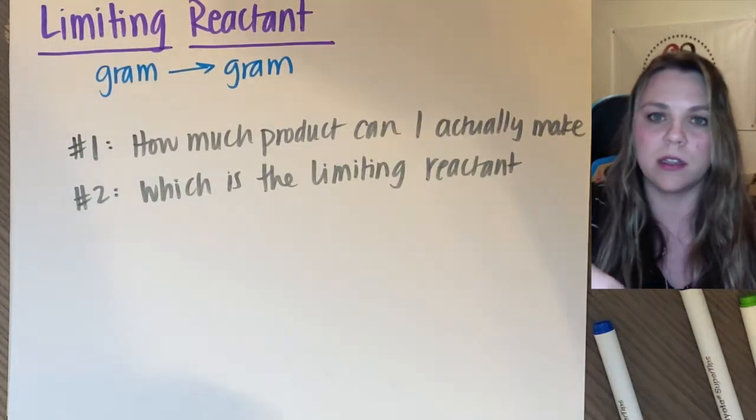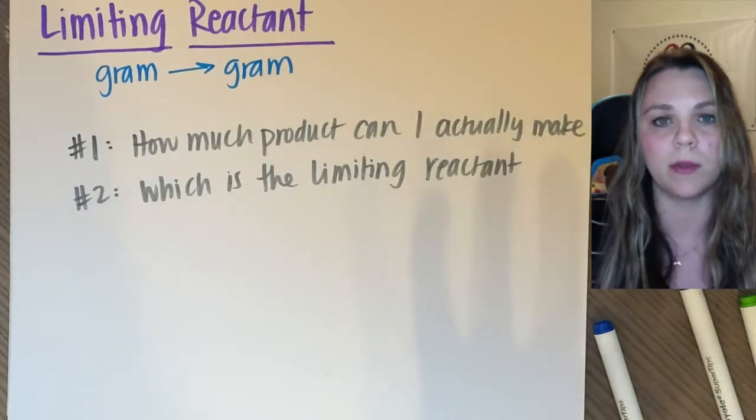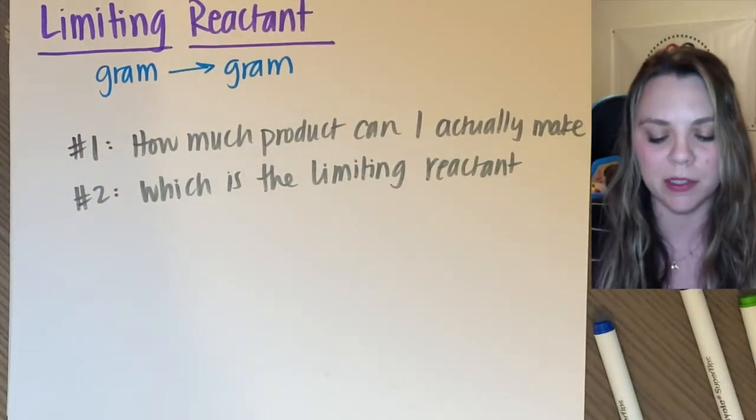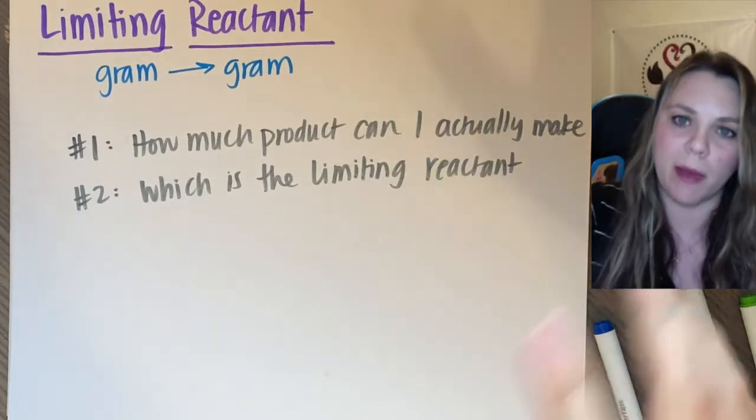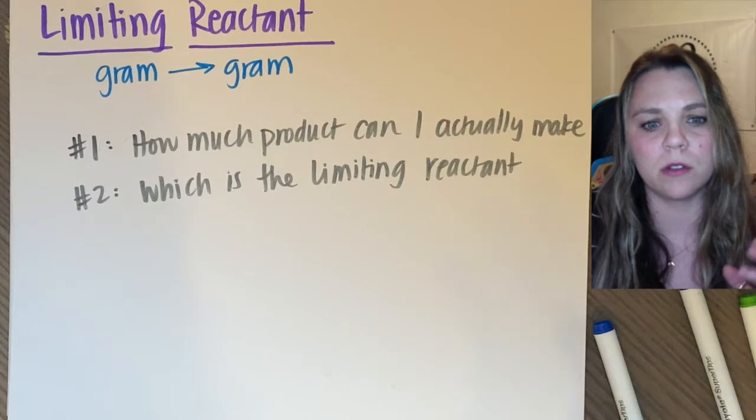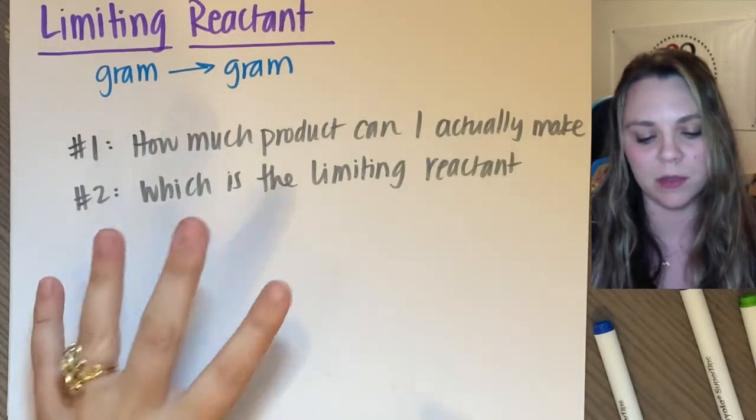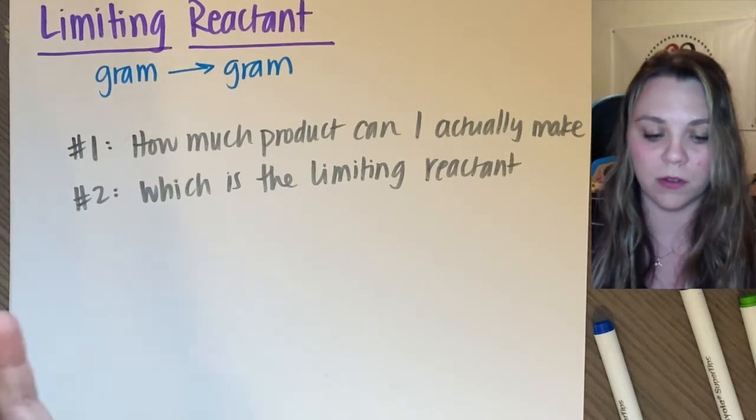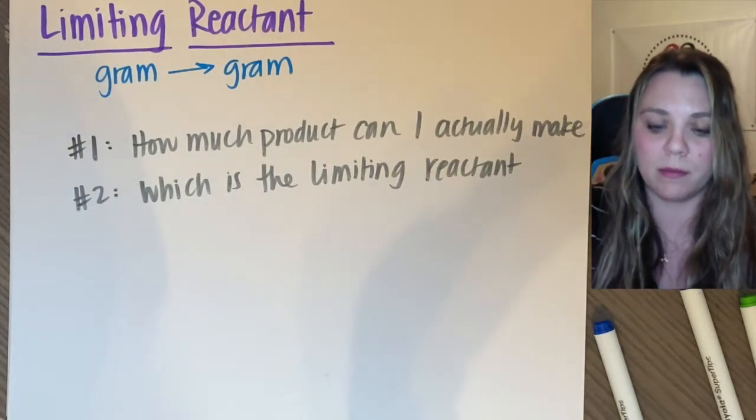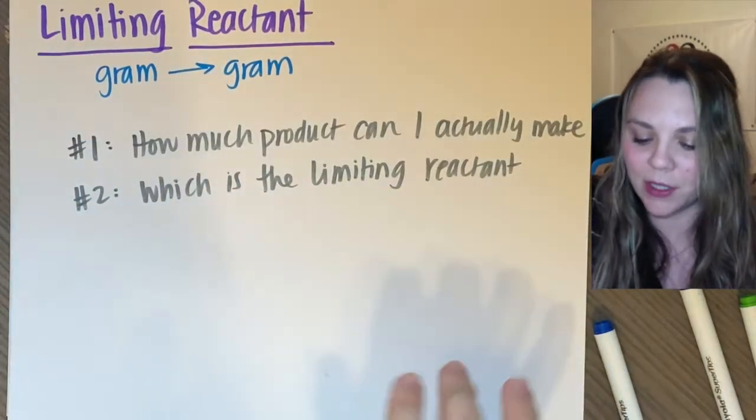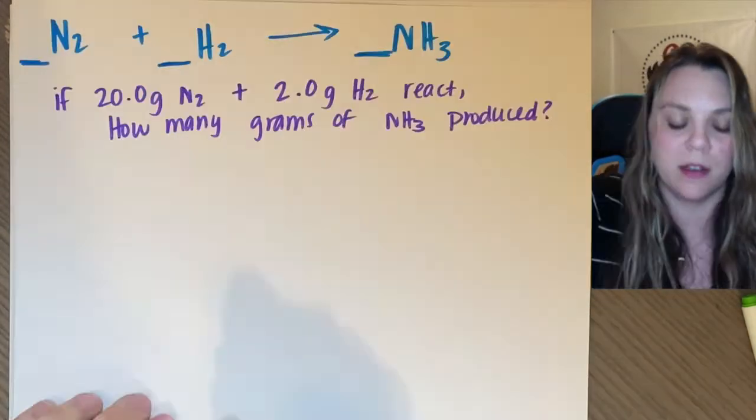You walk over to the scale and you mass it. So you have some amount of grams of your reactant. And then a chemical reaction happens and then you have a product. And you walk back over to the scale and you mass it and you have some amount of mass of your product. So almost always in lab, you're going to be doing your limiting reactant problems converting gram to gram. So I think it's important that you actually see an example of doing a gram to gram problem.